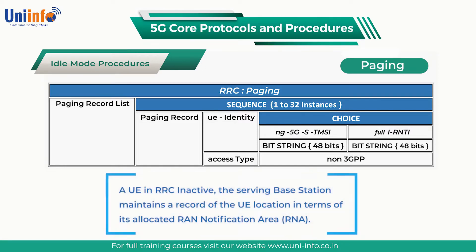For a UE in RRC inactive, the serving base station maintains a record of the UE location in terms of its allocated RAN notification area (RNA). The UE triggers an RRC resume procedure with cause value RNA update if it moves outside the allocated RNA. The UE does not update the network while moving within the allocated RNA. In general, this means that paging messages must be broadcast by all base stations belonging to the allocated RNA.